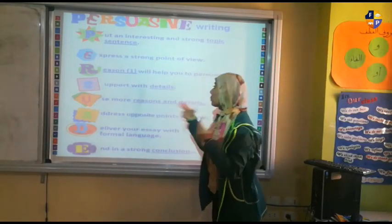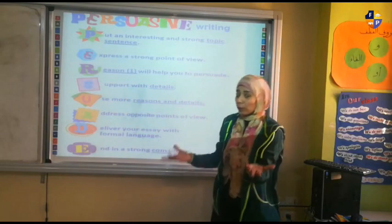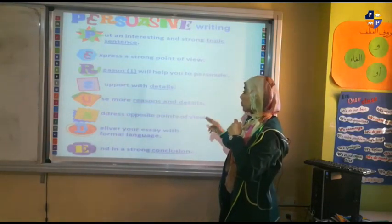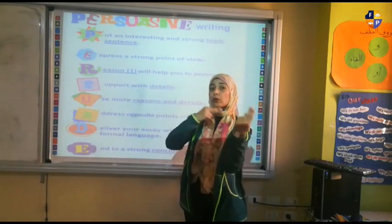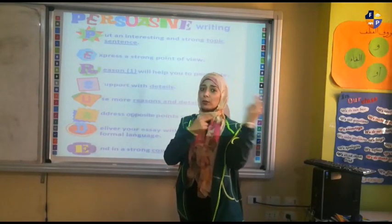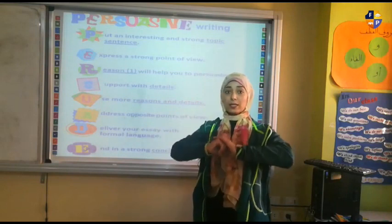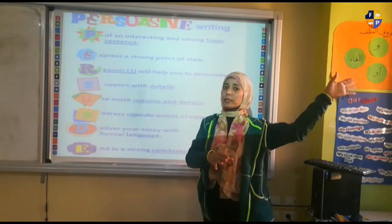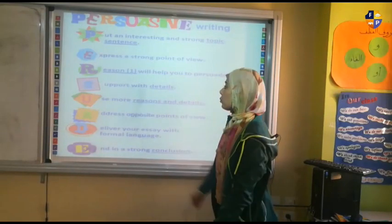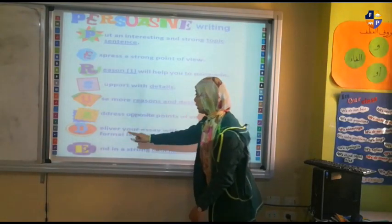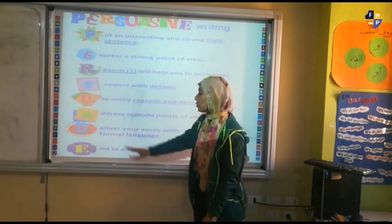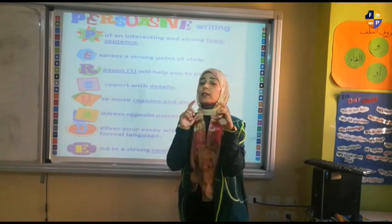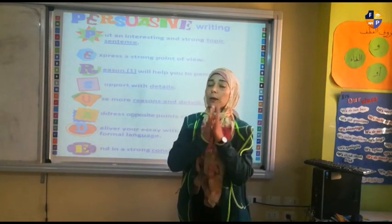U is to use more reasons and details — it's better to use more than one reason. A is to address opposite points of view. If someone has a different point of view, you can involve it in your essay and try to convince the reader that the other point of view is not correct and yours is. D is to deliver your essay with formal language. E is to end with a strong conclusion — I have to write a very good conclusion to conclude my essay.